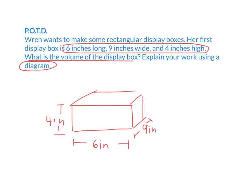I can find the volume by measuring the length times the width times the height. What is 6 times 9? 54. So that's the same as 54 times 4. I could use the standard algorithm, or I could break it up using the distributive property. What's 4 times 50? 200. What's 4 times 4? 16. So what's 4 times 54? 216.